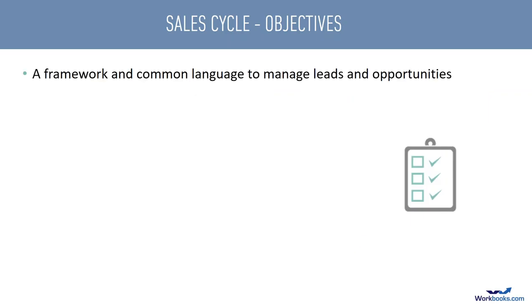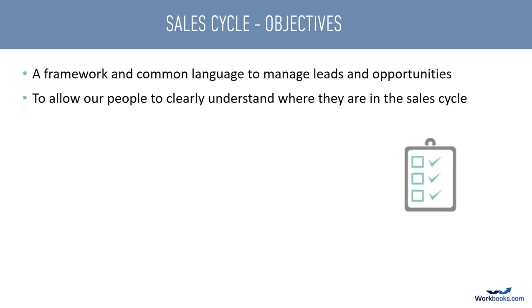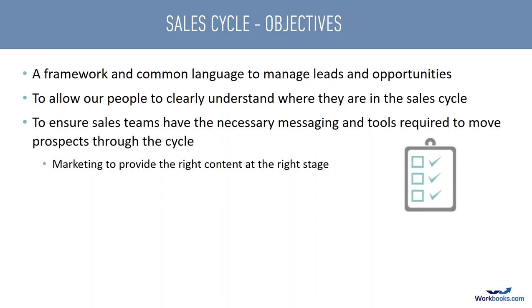One key objective in defining your sales process is having a common framework and language to manage leads and opportunities. When you talk about a lead being qualified or an opportunity closing, everybody in the organization understands what that means and what stage it really is. It also allows people to understand where they are in the process — are we building value and business case, or closing out a deal? With a well-defined process, your marketing team can provide the right content at the right part of the sales cycle, whether building value early or building credibility through reference accounts at the end.